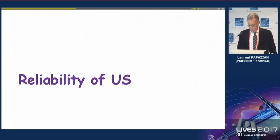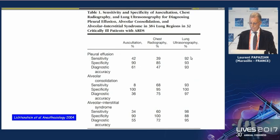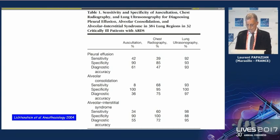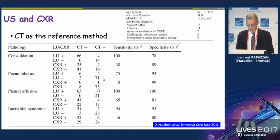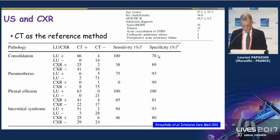Regarding the reliability of ultrasound: ultrasounds have been compared to other techniques, with CT scan as the reference. Lung ultrasonography is associated with very good specificity for identifying pleural effusion, consolidation, and alveolar-interstitial syndrome. For pneumothorax there is a reduced sensitivity of 75%, with very good specificity. Sensitivity was 100% for consolidation, with a specificity of only 78%.